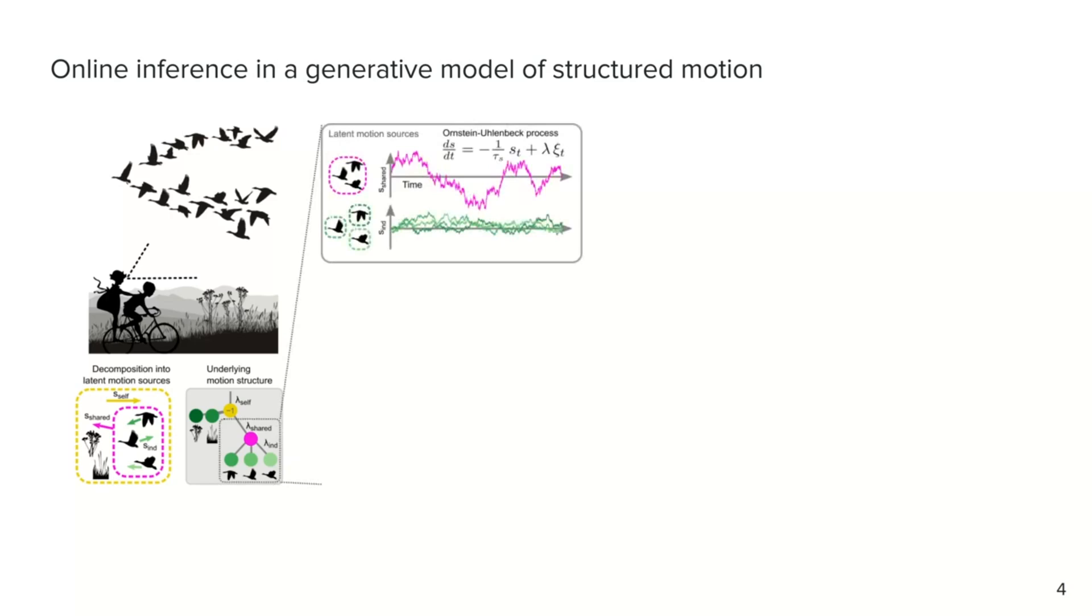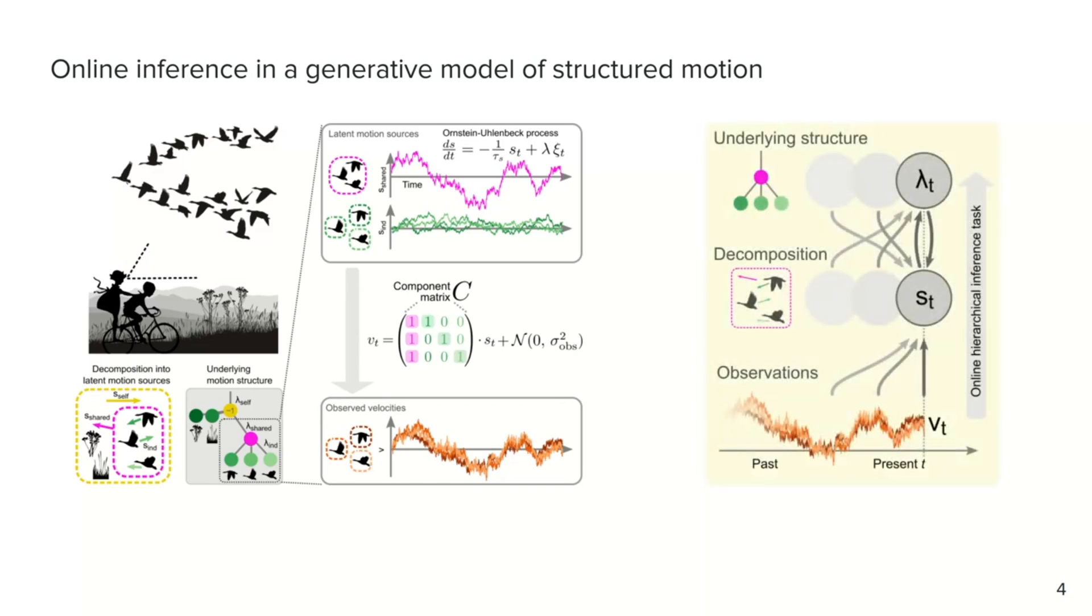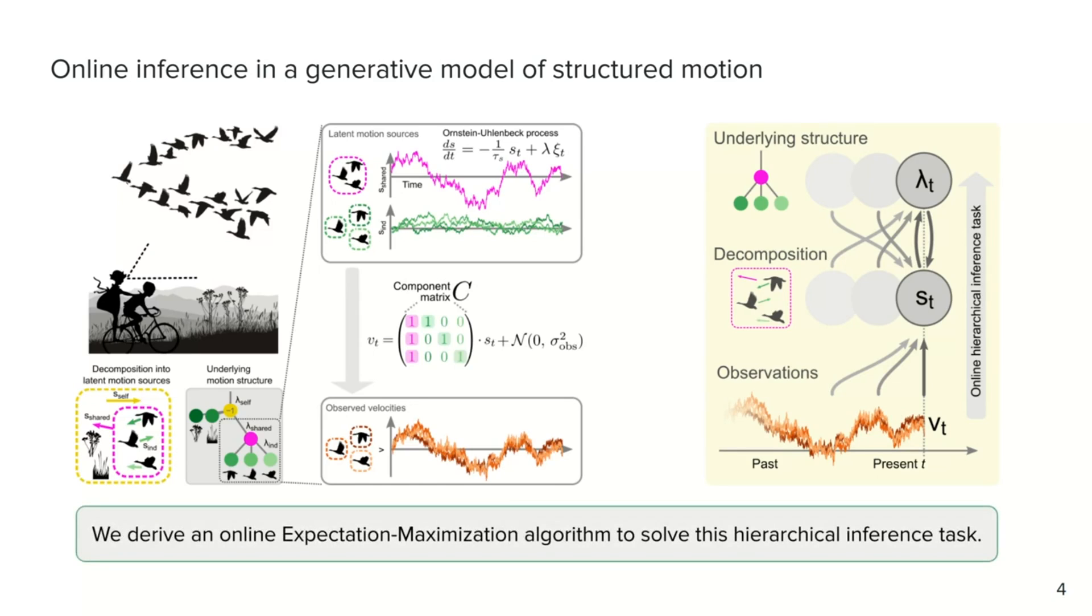For the generative model, we assume that motion sources follow Einstein-Uhlenbeck processes and that observed velocities are simply the sum of all contributing motion sources plus some observation noise. The task for inference is to solve the chicken and egg problem to simultaneously infer the underlying structure of the scene, while using this structure to guide the decomposition of velocities into their latent motion sources. We derive an online EM algorithm that solves this task using that motion sources and structure change at different timescales.